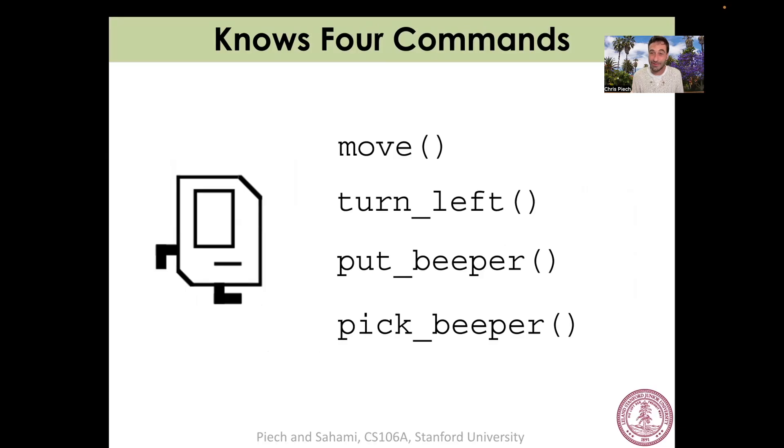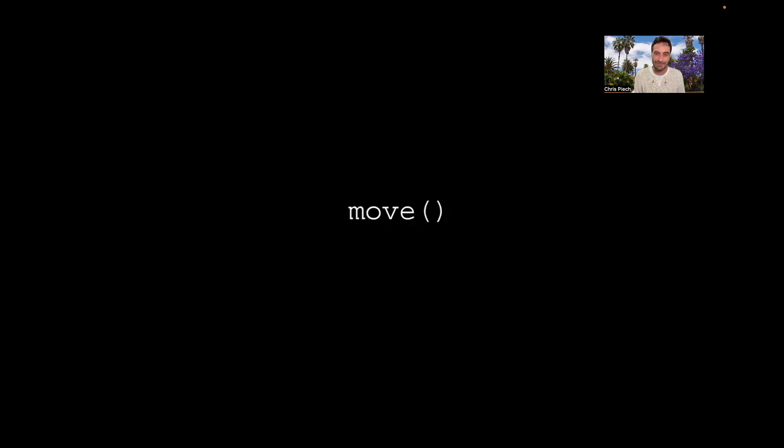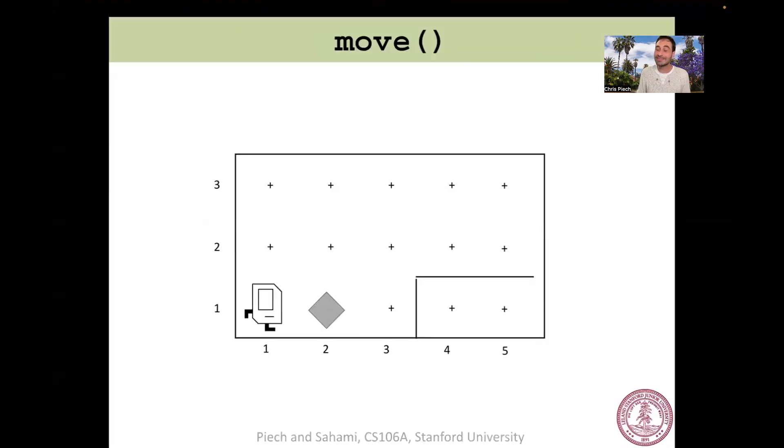Carol only knows those four commands. But using all these four commands, you can solve incredibly complicated programs using Carol. The first command that Carol knows is move. And you know what move does. If Carol's standing on a square and you call the move command, Carol just takes one step forward. So there you go. Carol just moved.